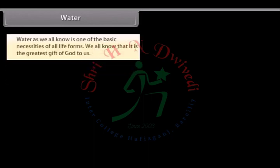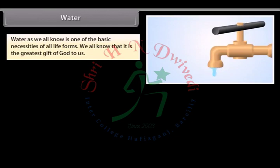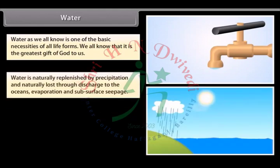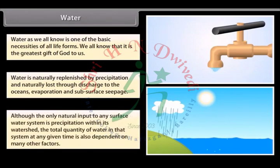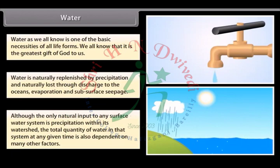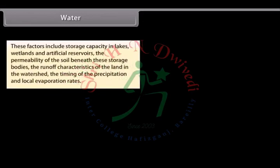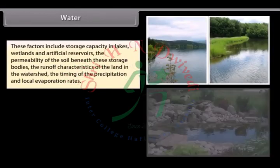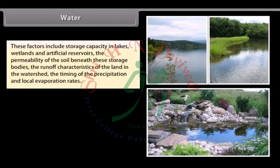Water is one of the basic necessities of all life forms — it is the greatest gift of nature to us. Water is naturally replenished by precipitation and naturally lost through discharge to the oceans, evaporation and subsurface seepage. The total quantity of water in any surface water system at any given time also depends on storage capacity in lakes, wetlands and artificial reservoirs, the permeability of the soil beneath these storage bodies, the runoff characteristics of the land in the watershed, and the timing of precipitation and local evaporation rates.